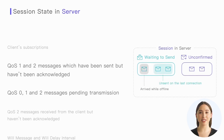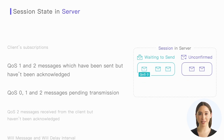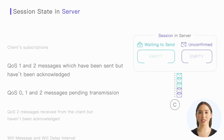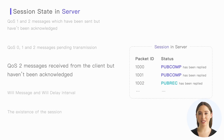This includes messages that were not delivered in the last connection and new messages received while the client was offline. For QoS0 messages, there is no mandatory requirement in the protocol, and the server may or may not store them — most servers will provide an option for users to choose. These messages are queued within the session and will be delivered in order once the client reconnects. In addition, the server also needs to store the QoS2 messages received from the client that have not been completely acknowledged.